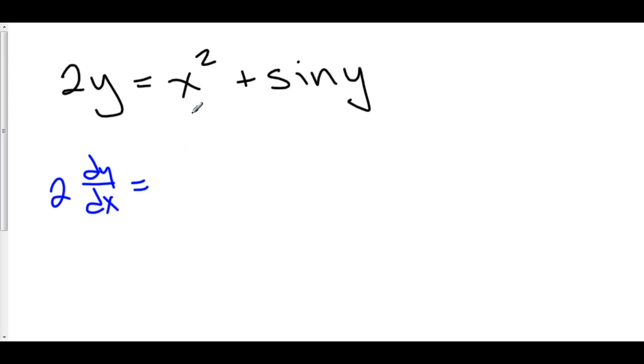This is equal to the derivative of x squared, which is 2x, plus the derivative of sine of stuff. And the derivative of sine stuff is cosine of stuff times the derivative of the stuff. And of course the derivative of y, again, is dy over dx.